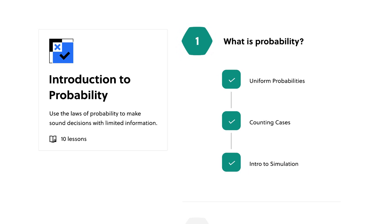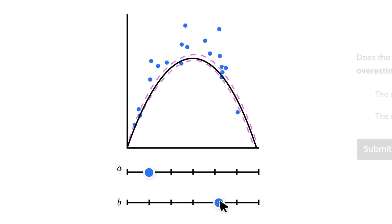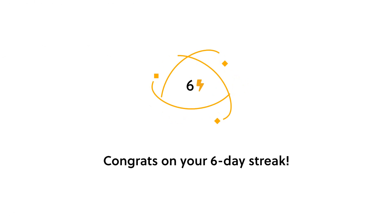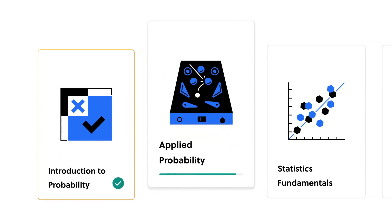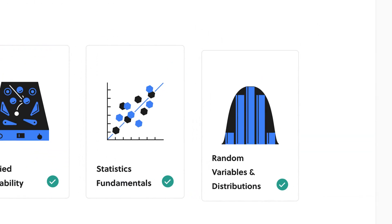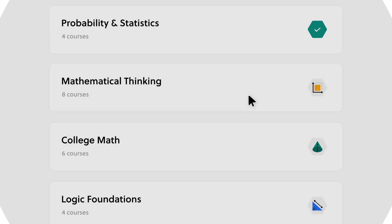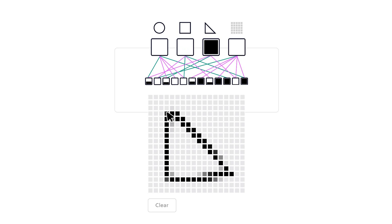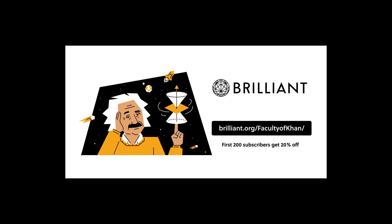The data science courses have been great in building my intuition with a hands-on approach that's quite effective, even on a busy schedule. The lessons on Brilliant are an excellent tool for lifelong learning in a fun and interactive way. To try everything Brilliant has to offer free for a full 30 days, visit brilliant.org/facultyofkhan or click on the link in the description below. The first 200 of you that sign up will get 20% off Brilliant's annual premium subscription.